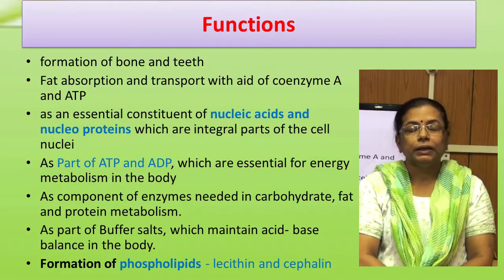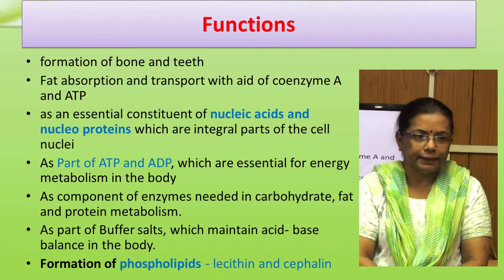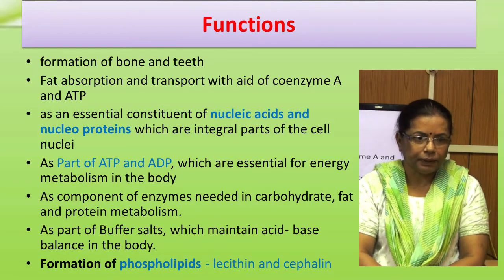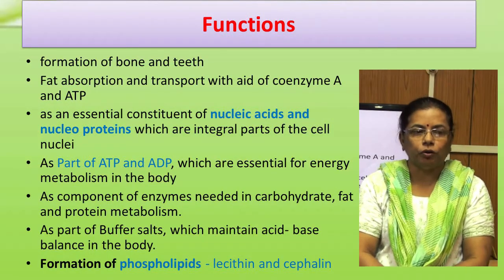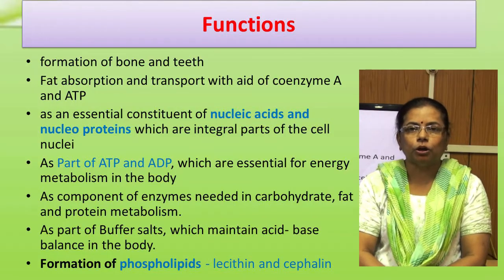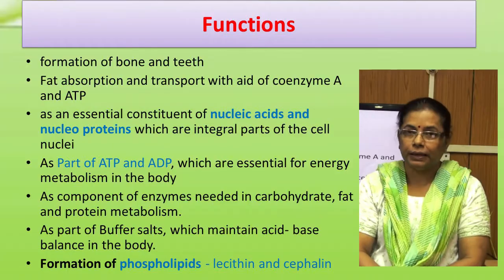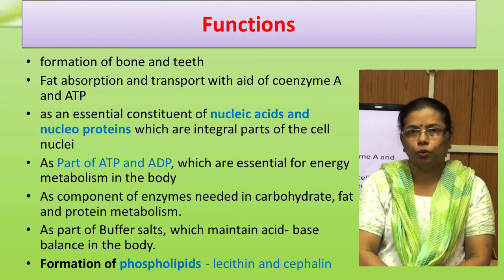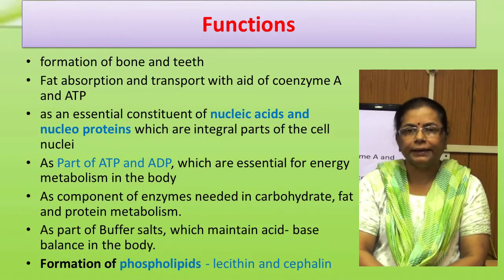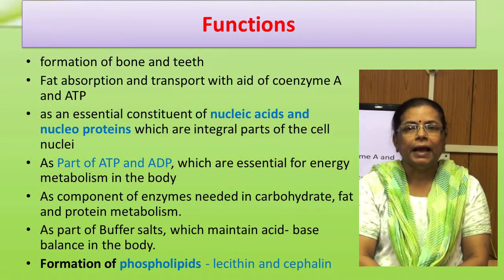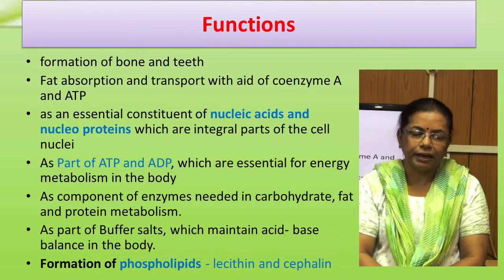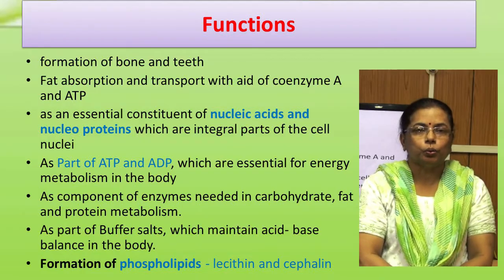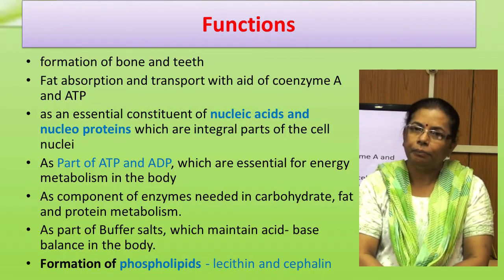Along with calcium, phosphorus is needed for the formation of bone and teeth. It helps in fat absorption and transport with coenzyme A and ATP. It is an essential constituent of nucleic acid and nucleoprotein, and as part of ATP and ADP it is essential in energy metabolism. As a component of enzymes, it is needed in carbohydrate, fat, and protein metabolism. As part of buffer salts, it maintains acid-base balance in the body, and it is needed for the formation of phospholipids. Cephalin and lecithin are important structural components that also help in fat absorption and metabolism.